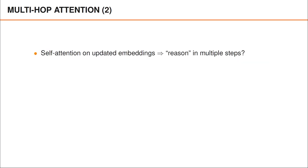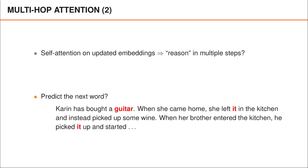One thing we hope to achieve when stacking attention layers is that information should be propagated in multiple steps or hops, in a manner that resembles how people reason about text in multiple steps. For instance, suppose we are asked to predict the next word in the following sequence: Karin has bought a guitar. When she came home, she left it in the kitchen and instead picked up some wine. When her brother entered the kitchen, he picked it up and started… something.